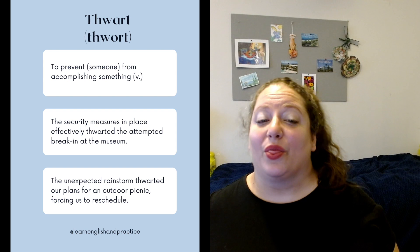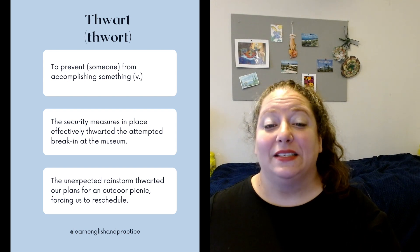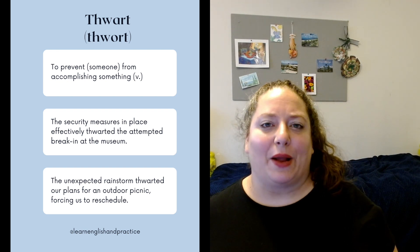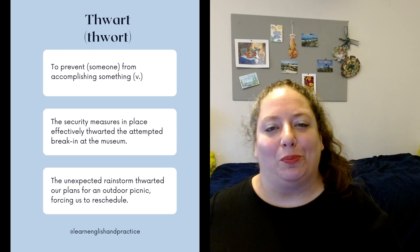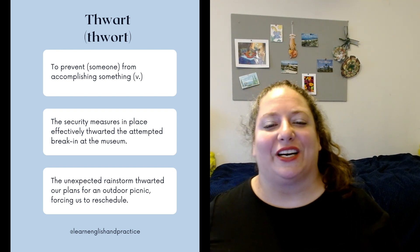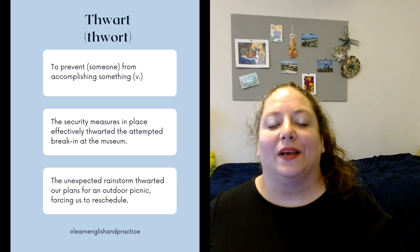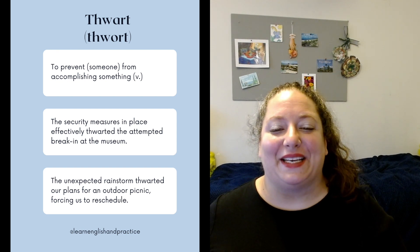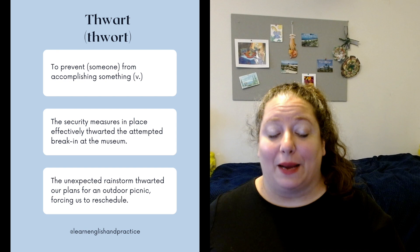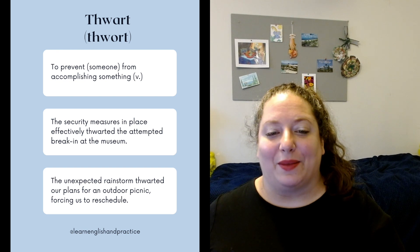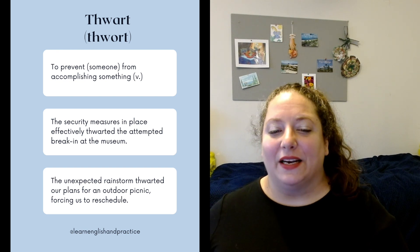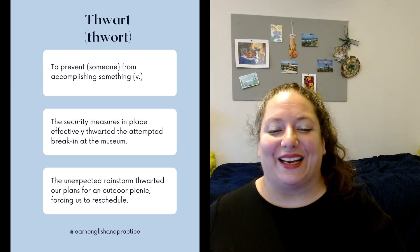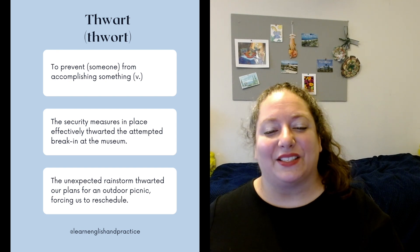First, thwart. This means to prevent someone from accomplishing something. So you might want to thwart an evil plot — you want to make sure it does not happen. Examples are: the security measures in place effectively thwarted the attempted break-in at the museum. The unexpected rainstorm thwarted our plans for an outdoor picnic, forcing us to reschedule.